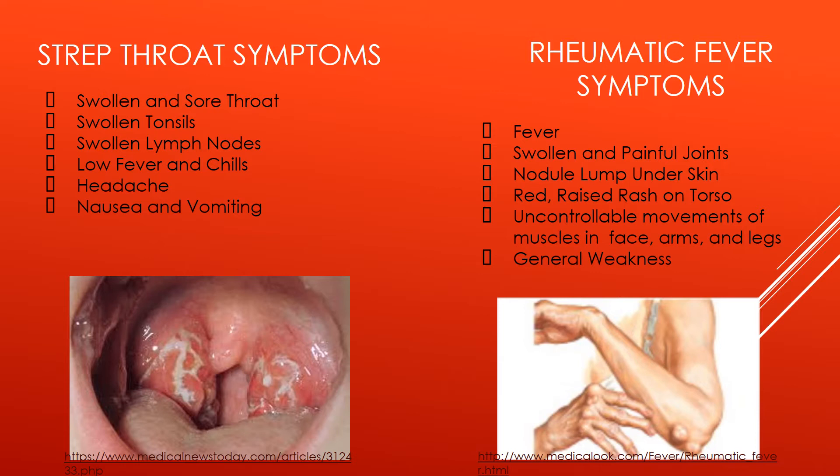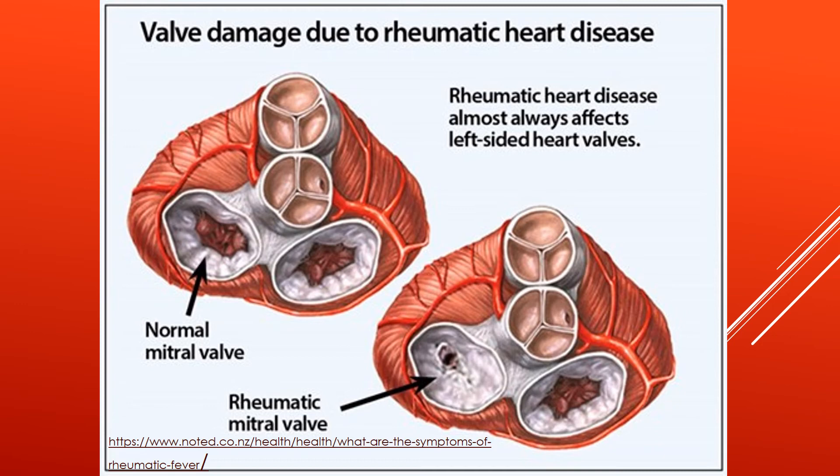If strep is untreated, rheumatic fever can develop. Some of the most common symptoms of rheumatic fever include a higher fever than strep throat, swollen and painful joints, nodule lumps under the skin, as shown in the picture on the slide on the right, a red and raised rash on the torso including the arms, chest, and back, uncontrollable spasms and movements of the muscles in the face, arms, and legs, and a general feeling of weakness.